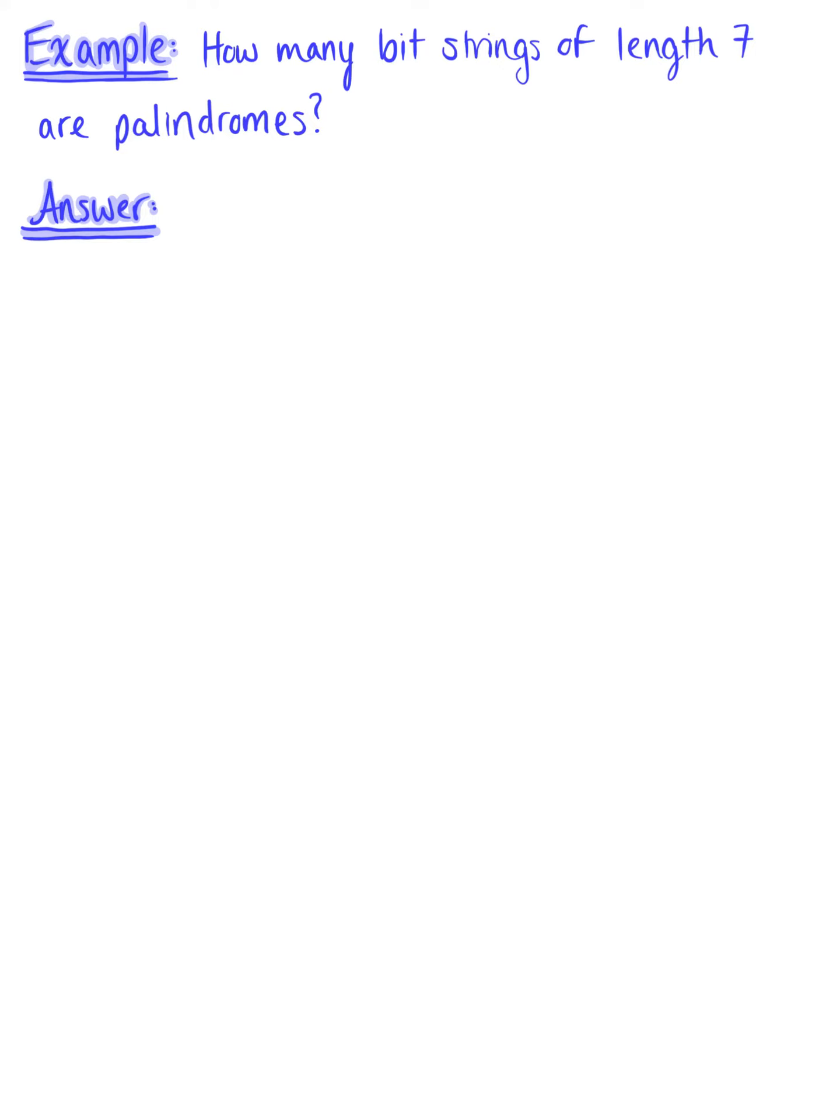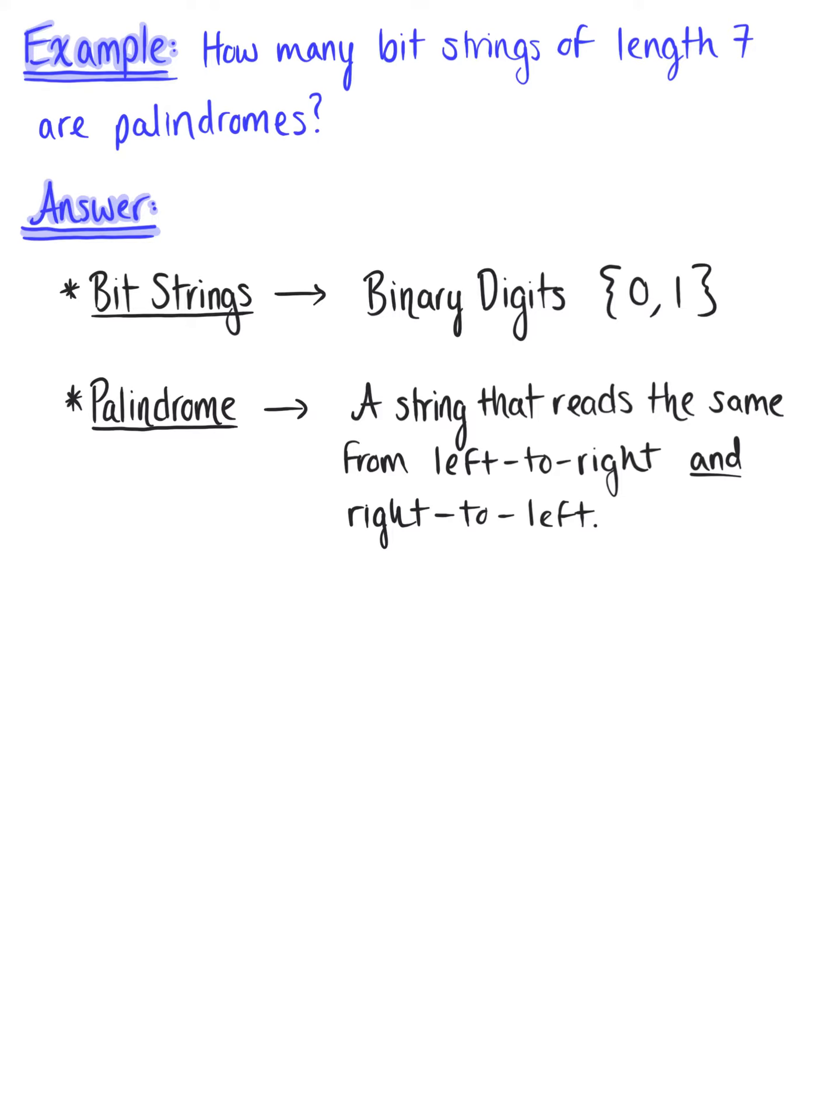How many bit strings of length seven are palindromes? Let's keep in mind that bit strings consist of binary digits, zero or one. And a palindrome is a string that reads the same from left to right and right to left, like the word racecar.